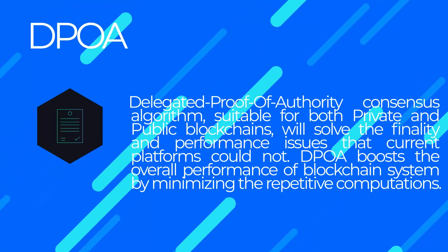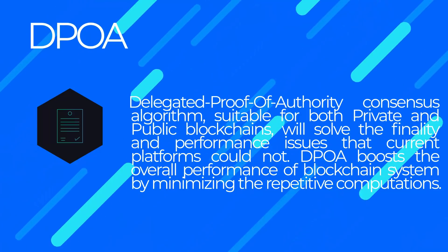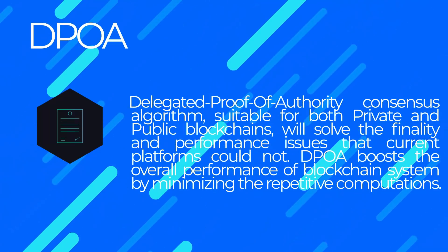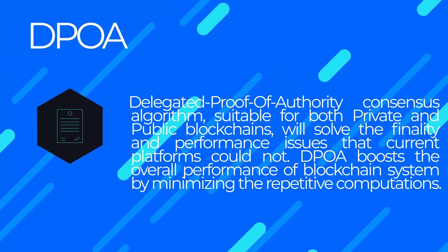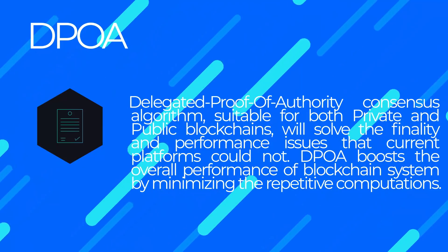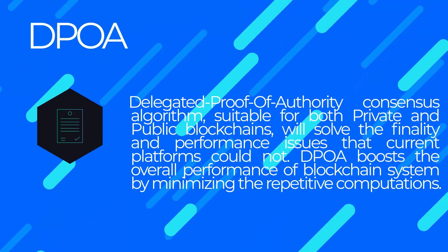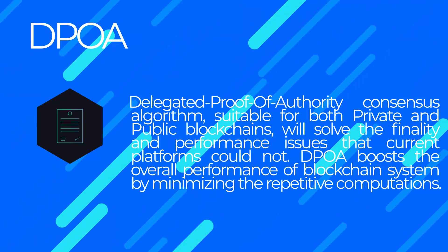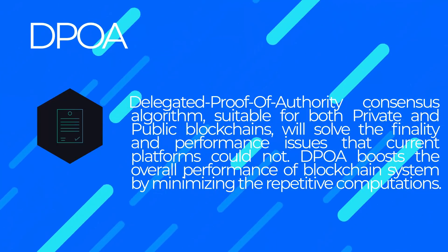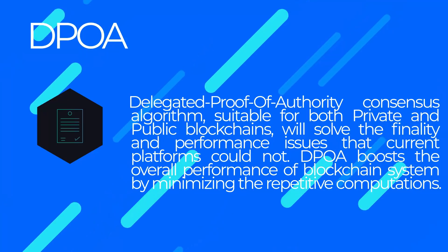EPOA. Delegated proof-of-authority consensus algorithm, suitable for both private and public blockchains, will solve the finality and performance issues that current platforms could not. EPOA boosts the overall performance of the blockchain system by minimizing repetitive computations.